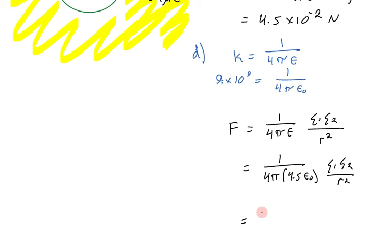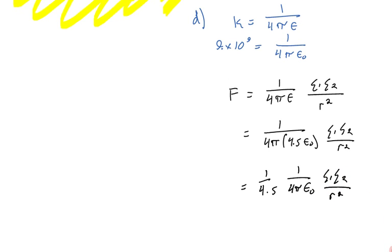The next thing that I can do is pull the 4.5 out front, and this gives me 1 on 4 pi epsilon naught, q1, q2 on r squared. And this you'll recognize as k, 9 times 10 to the ninth.